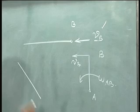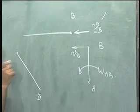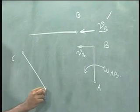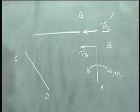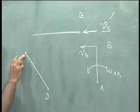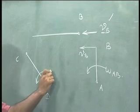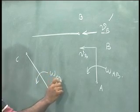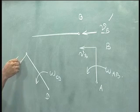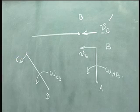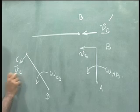Looking at CD, again this is equal to zero. Velocity of this is equal to zero. This I can now spot supposing this is the angular velocity of CD. Then I know the direction of the velocity at C should be like this.